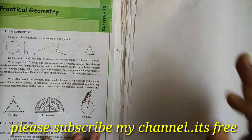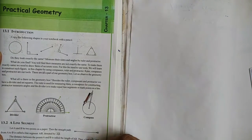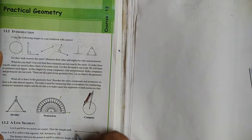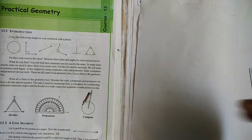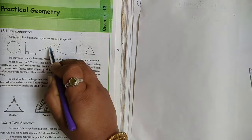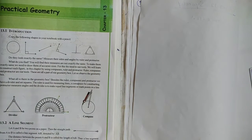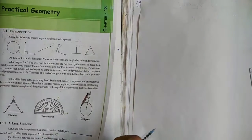Ruler means scale. Line segment means a point. This is the arrow mark. We have a lot of easy chapters, but I am going to do it — directing in exercise.